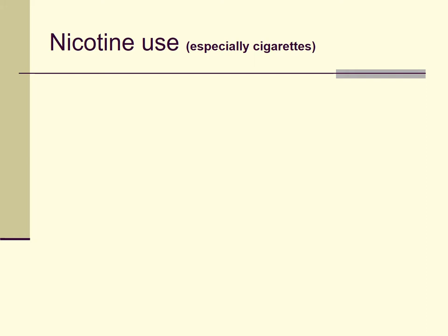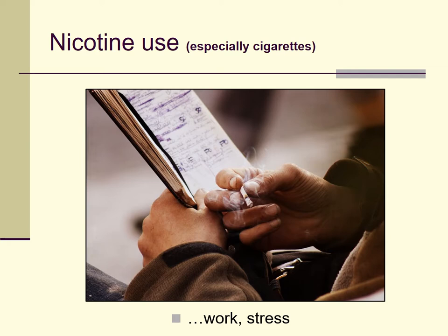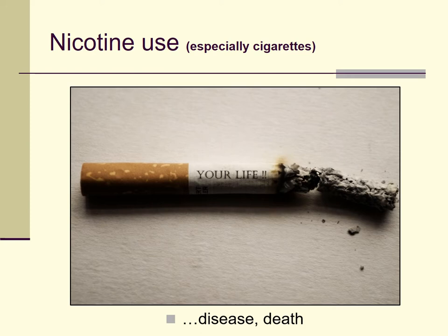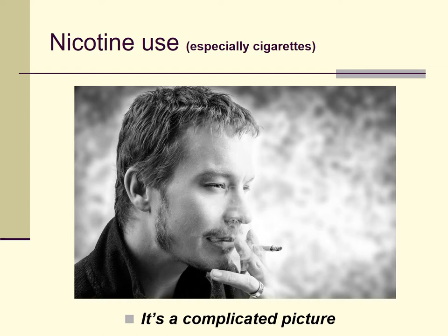It's associated with sophistication. It's associated with rebellion, or being cool, or stepping outside of what's normative for your society. It's associated with work and with stress, often as a way of coping with these problems. It's associated with addiction or dependence, and of course associated with disease and with death. Nicotine in cigarettes is a source of great profits for the producers of this drug and great profits for the governments which tax and regulate it. When we look at a drug like nicotine in the form of smoked cigarettes, we see a really complicated picture.